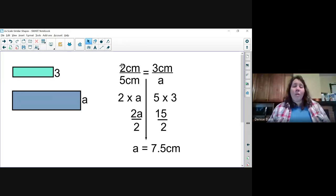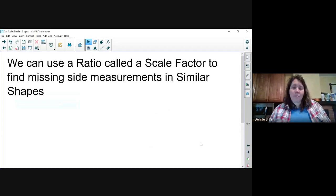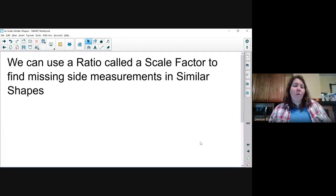Cross multiply, bring down your equal sign, solve for the missing measurement. We can use a ratio called a scale factor to find missing side measurements in similar shapes.